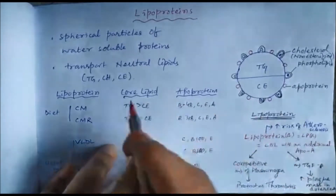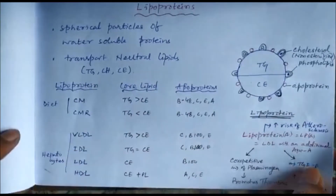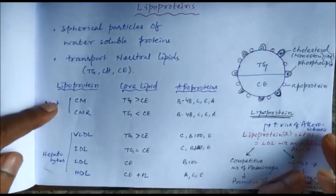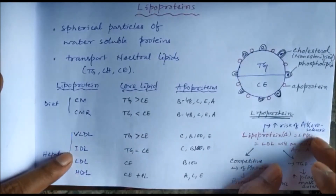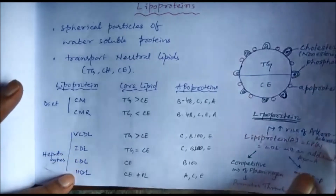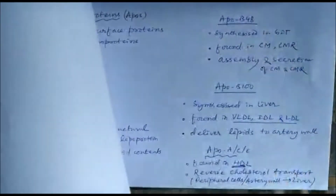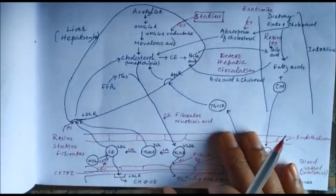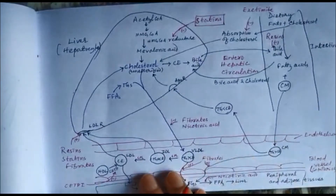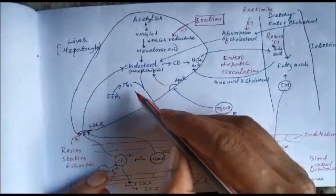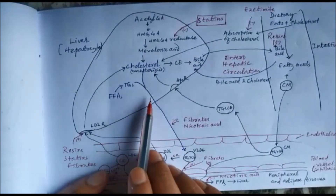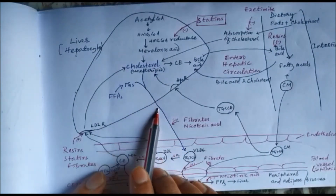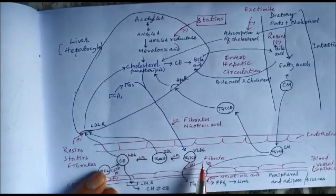Lipoproteins are spherical particles of water-soluble proteins and they transport lipids like triglycerides, cholesterol, and cholesterol esters. We have different types: very low density lipoprotein (VLDL), low density lipoprotein (LDL), high density lipoprotein (HDL), chylomicron, and chylomicron remnants. Cholesterol and triglycerides combine to form VLDL, which is secreted from the liver into the blood.